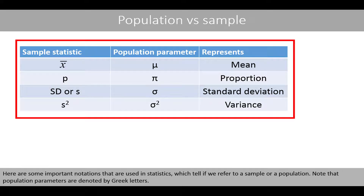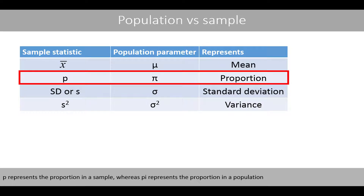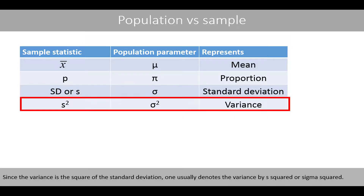Here are some important notations that are used in statistics, which tell us if we refer to a sample or a population. Note that population parameters are denoted by Greek letters. X-bar represents the mean of a sample, whereas mu represents the mean of a population. P represents the proportion in a sample, whereas pi represents the proportion in a population. The standard deviation of a sample is usually denoted by SD or S, and by the Greek letter sigma for a population. Since the variance is the square of the standard deviation, one usually denotes the variance by S-squared or sigma-squared.